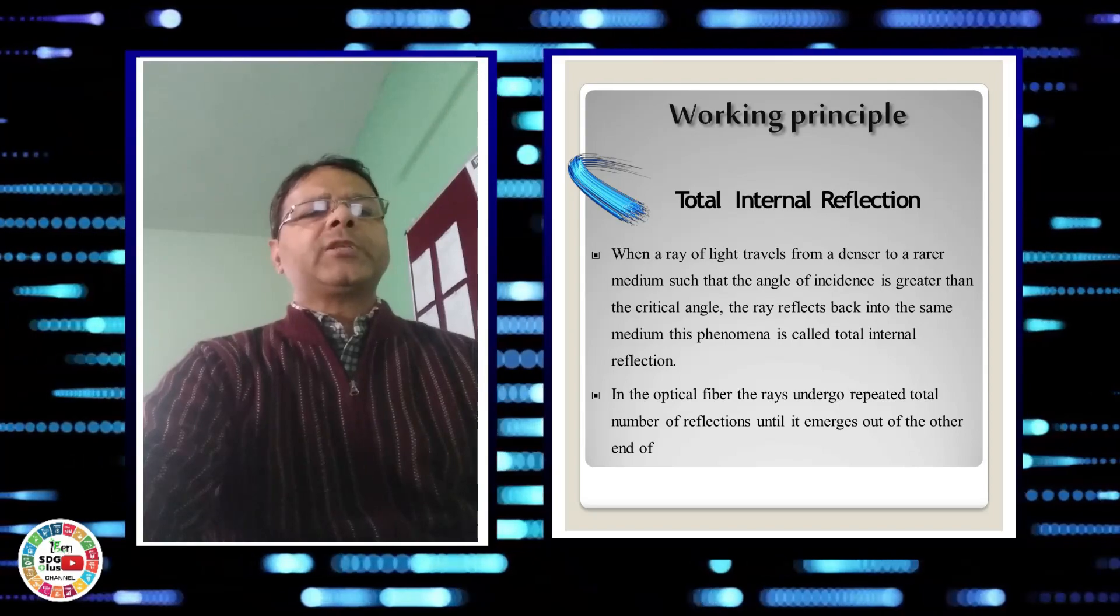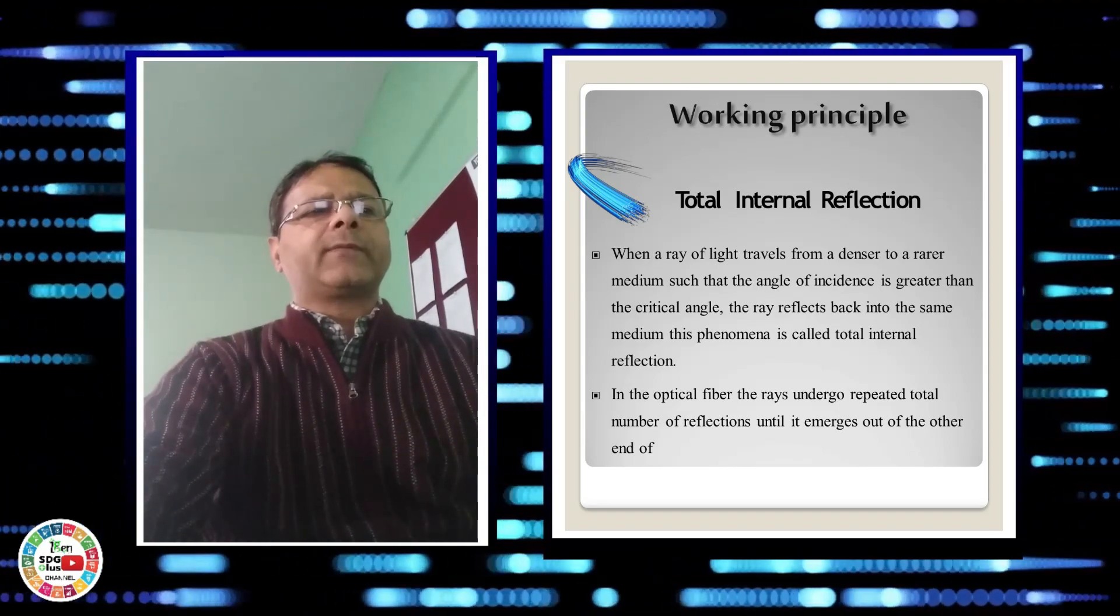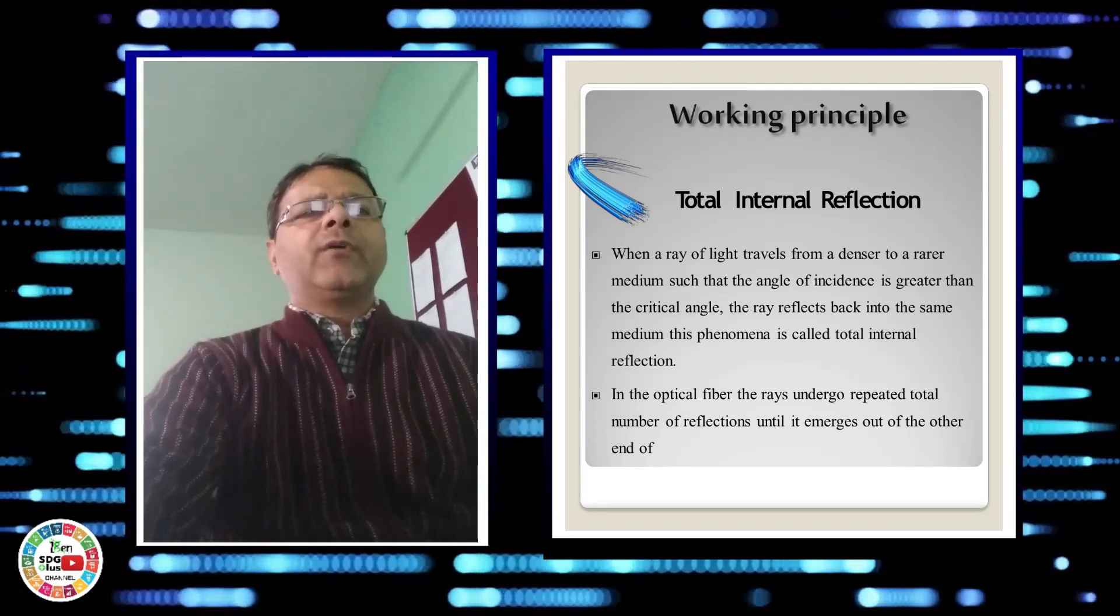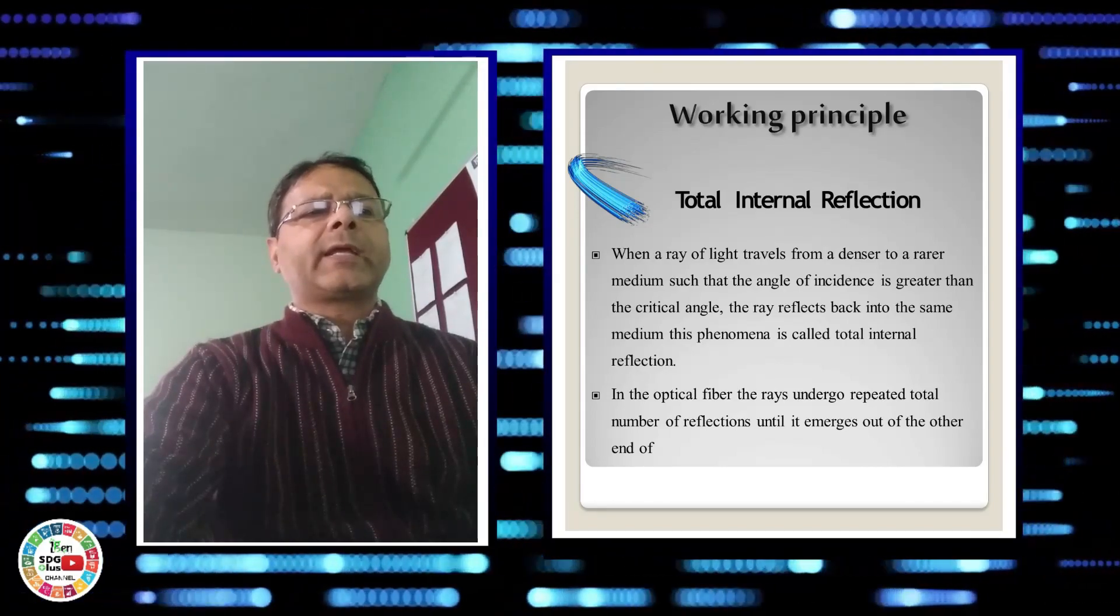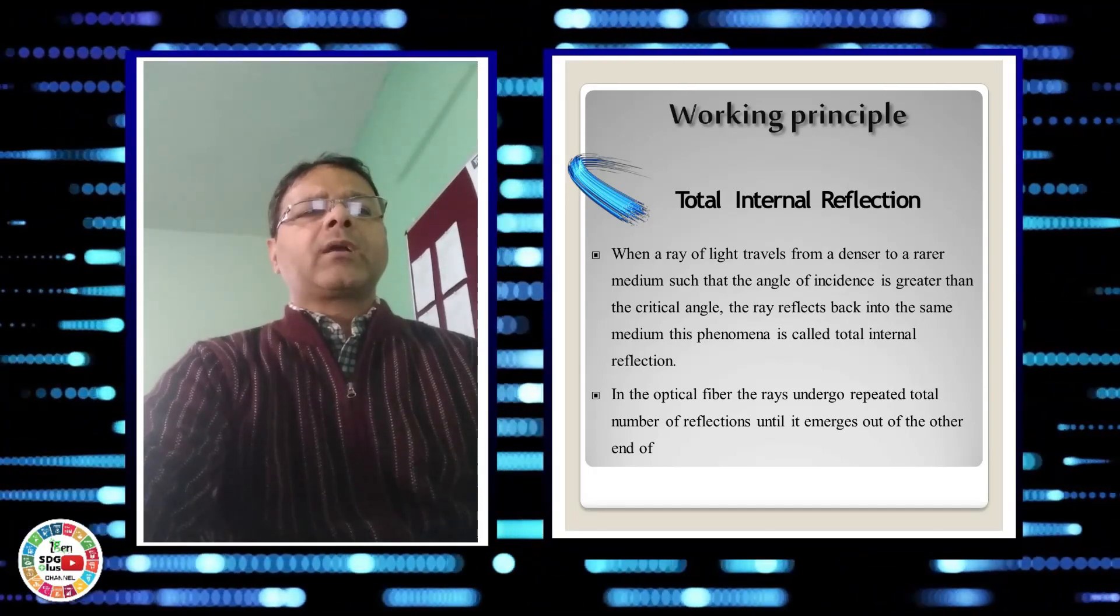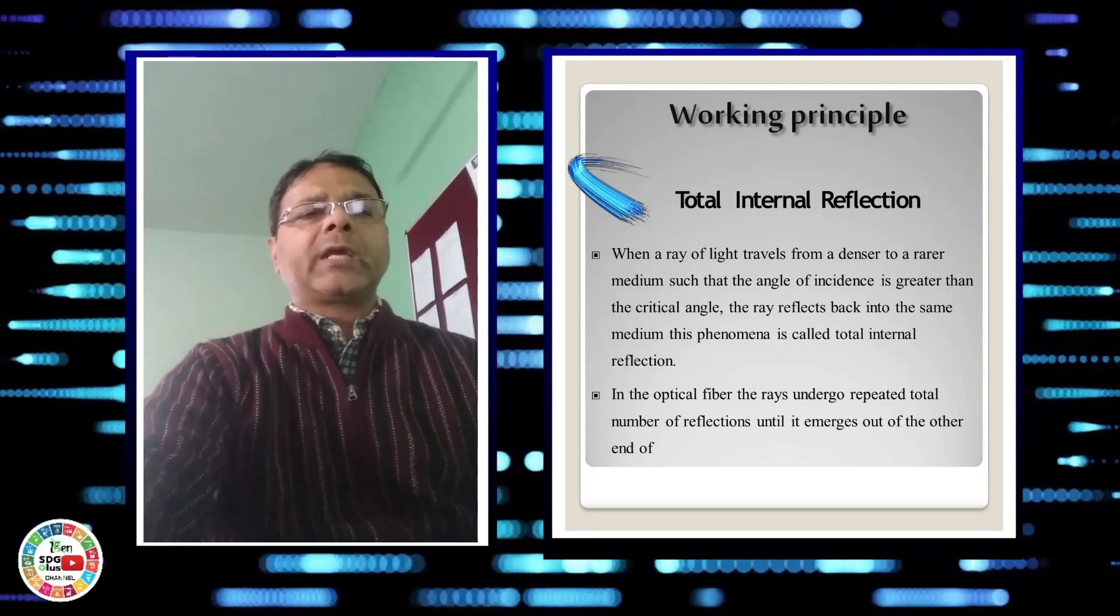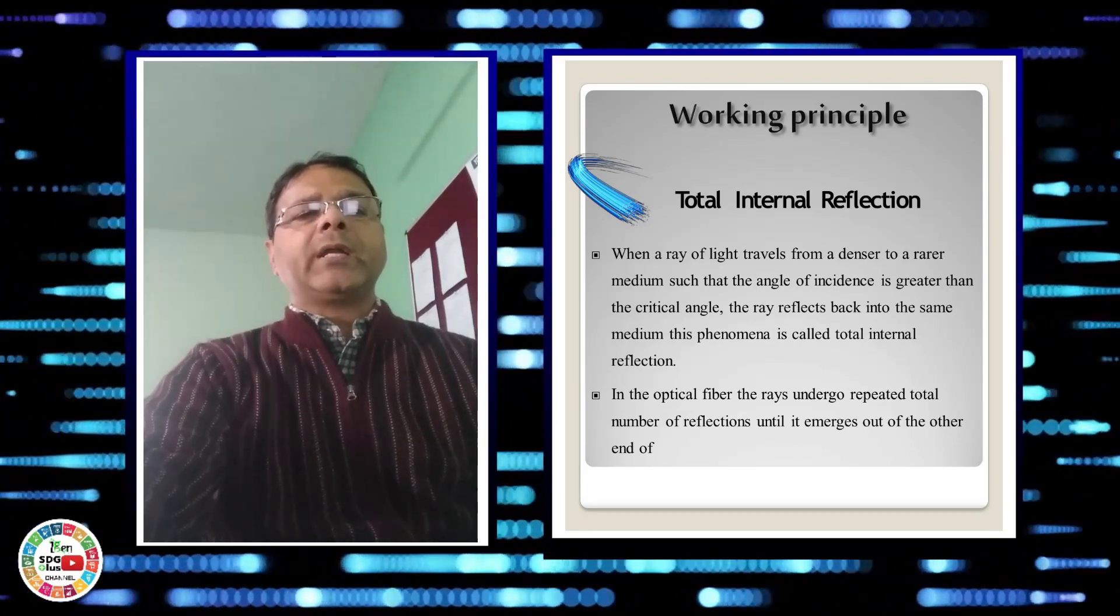Now the principle which we are using in optical fibers is total internal reflection. What is total internal reflection? When a ray of light travels from a denser to rarer medium such that the angle of incidence is greater than the critical angle, the ray reflects back into the same medium. This phenomenon is called total internal reflection.